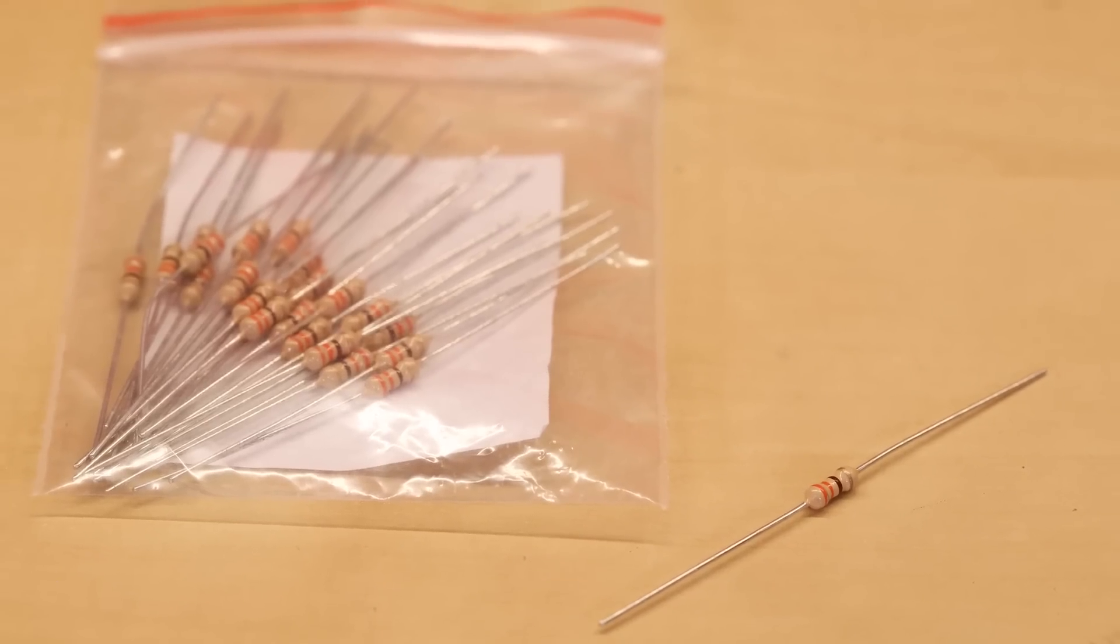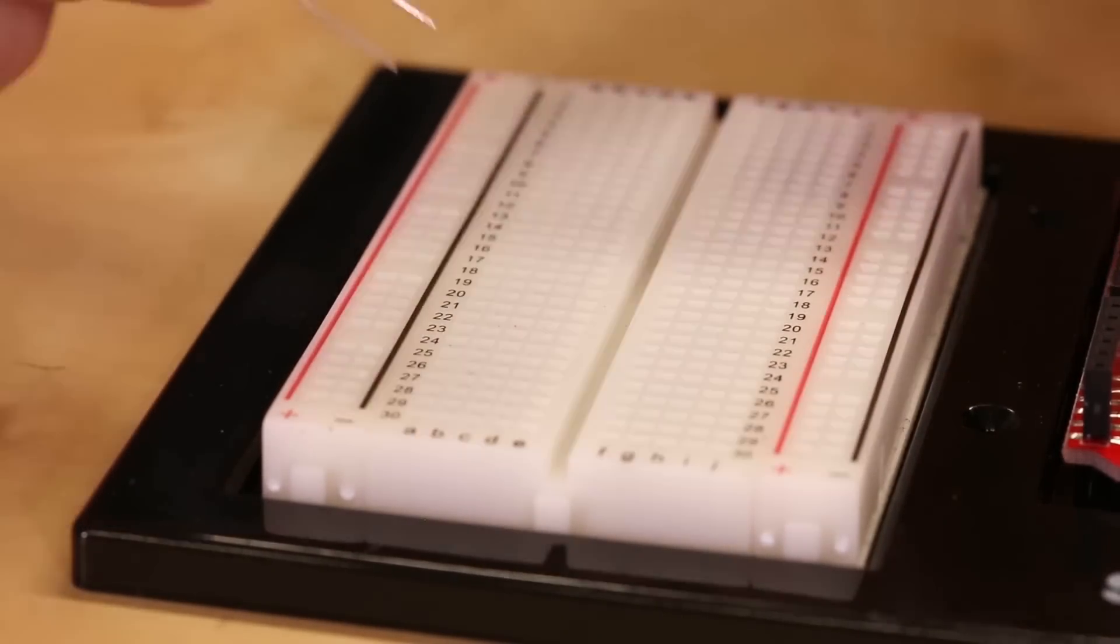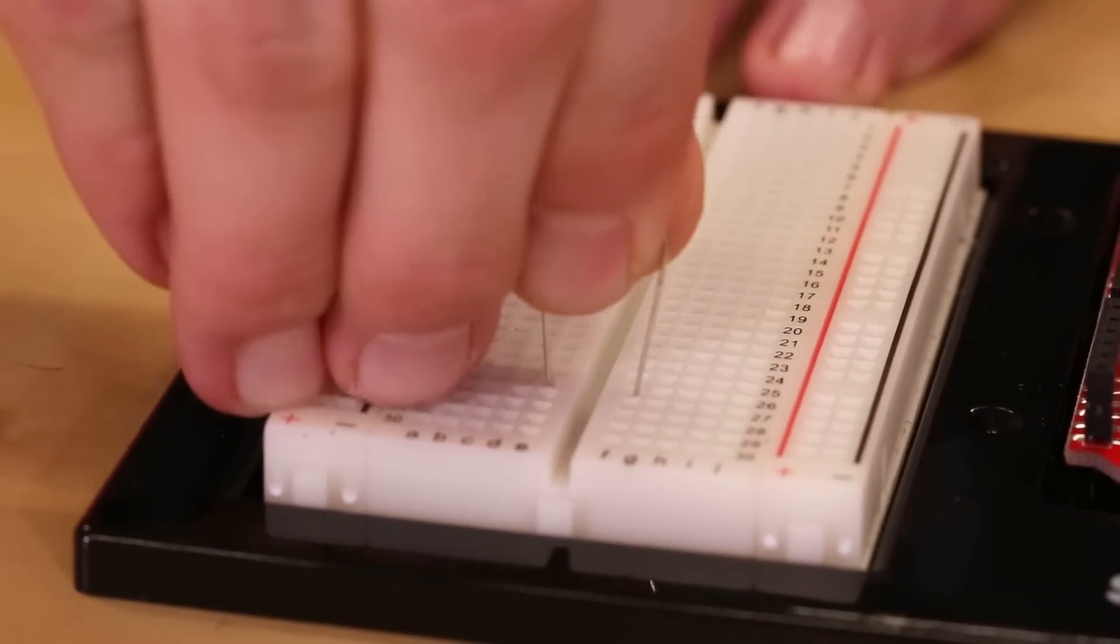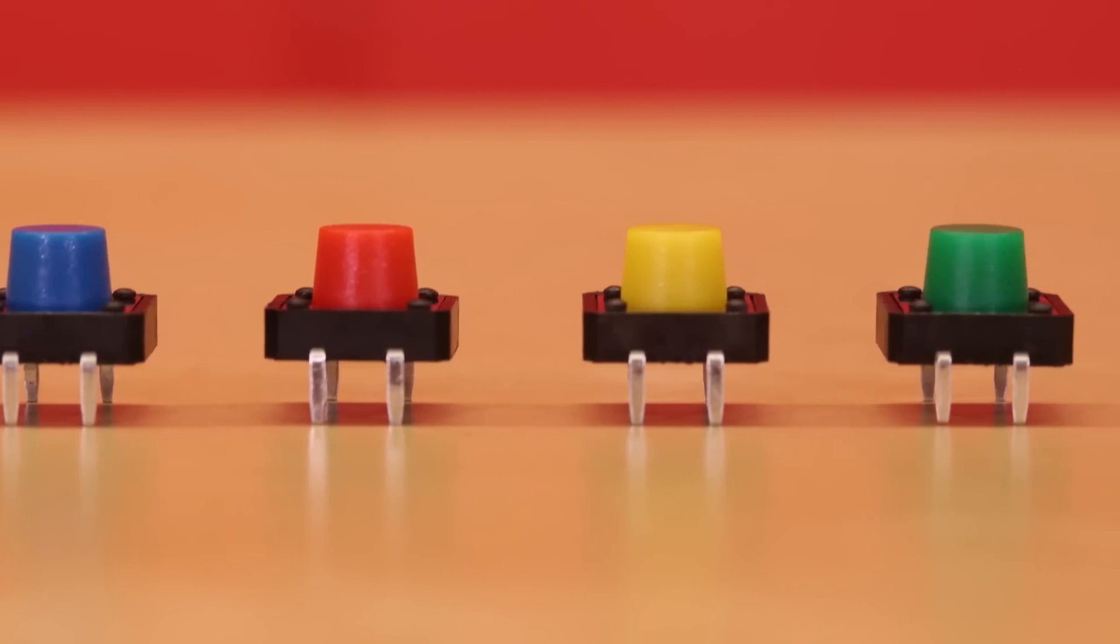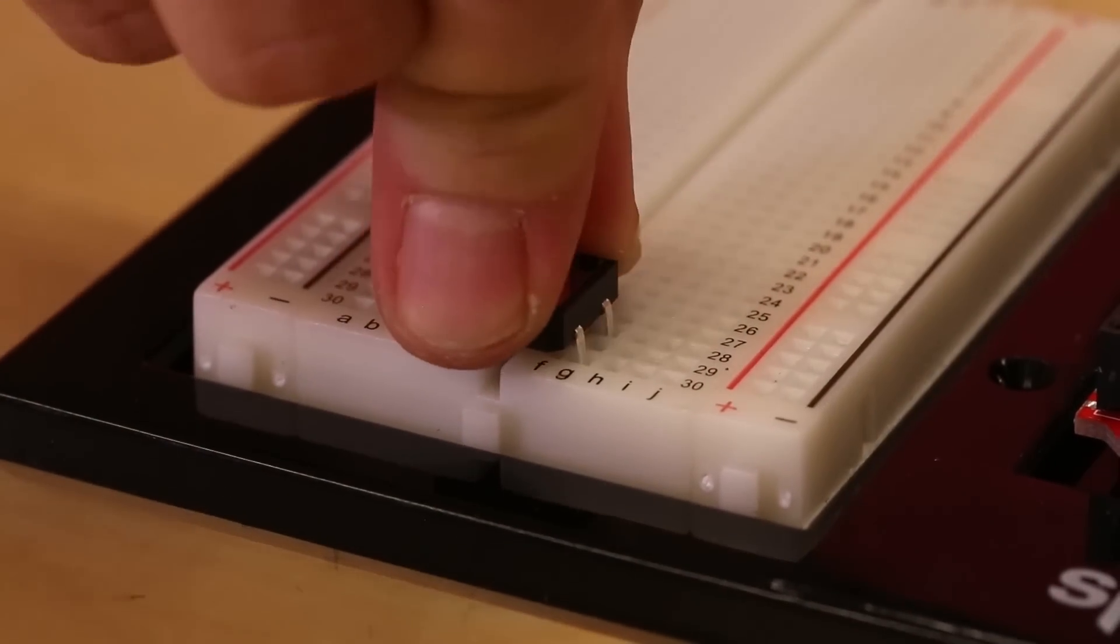A couple classic SIK parts have also gotten a facelift. The included resistors now have thicker leads, allowing them to be plugged into a breadboard more easily. We've also had new buttons custom made that have straight legs that also fit into a breadboard more easily, and have custom colored caps.